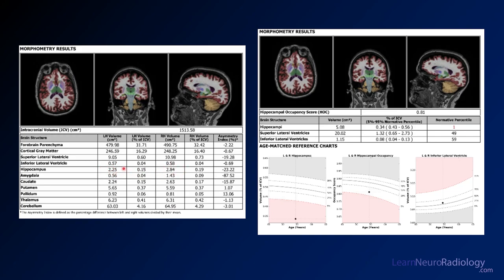The left hippocampus is about 23% smaller than expected. This shows hippocampal volume plotted against age-matched controls. The normal range would be from here to here, and this patient is well below average. The hippocampus is quite small — this person is in the first percentile for hippocampal volume, which is very low.